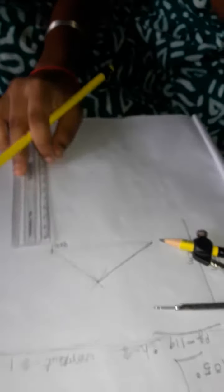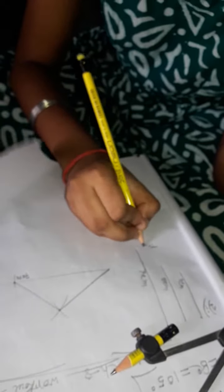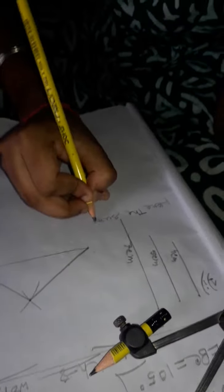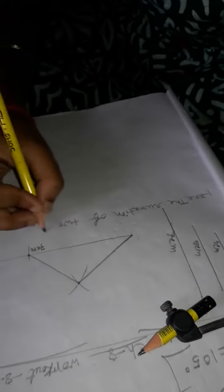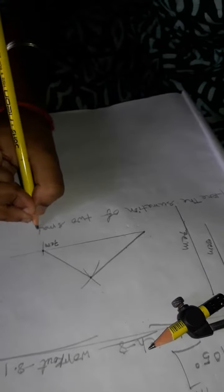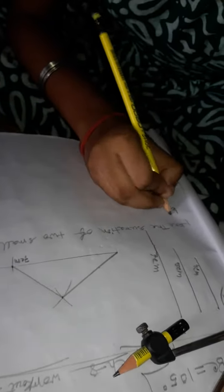Here a triangle can be constructed. Yes, a triangle can be constructed here. So, write this. Here, the summation of two small sides is...